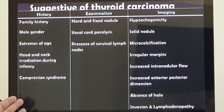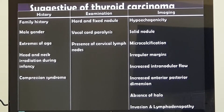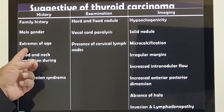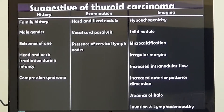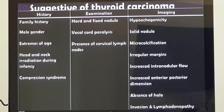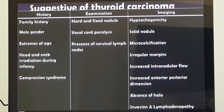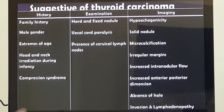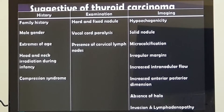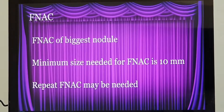Other features include: family history of thyroid malignancy, male gender, extreme of age — less than 20 or more than 60 — or a previous history of radiation during childhood. In these patients, even if the thyroid nodule size is less than 10 millimeters, I will definitely go ahead and do a fine needle aspiration.